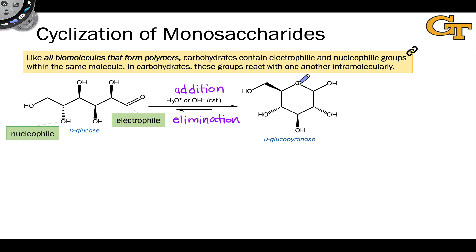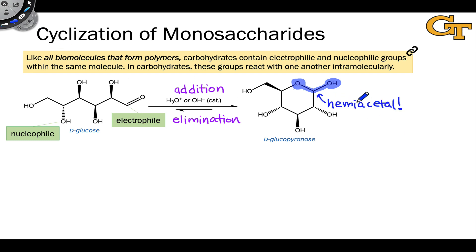If we pay close attention to the functional group that we've created here, we'll notice that it looks rather familiar. This is a tetrahedral carbon connected to two oxygens via single bonds, one of which is part of a hydroxyl group and the other of which is part of an alkoxy group. This is nothing more than a hemiacetal, and the mechanism of formation of this hemiacetal from the open chain form is really no different than the acid or base catalyzed formation of a hemiacetal that we've seen previously.